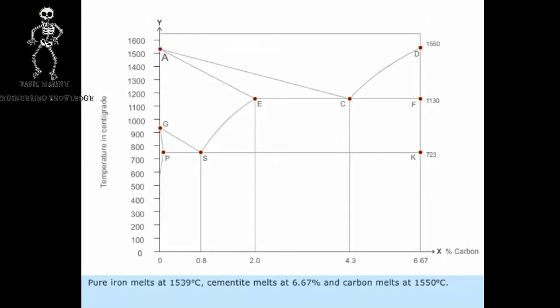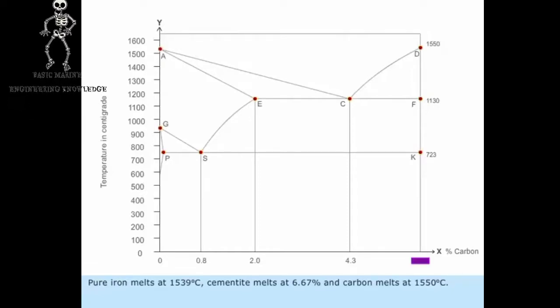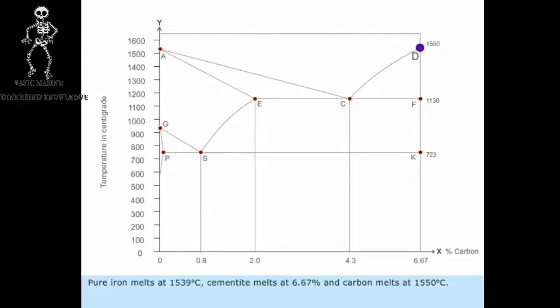Pure iron melts at 1539 degrees centigrade, cementite melts at 6.67 percentage, and carbon melts at 1550 degrees centigrade.